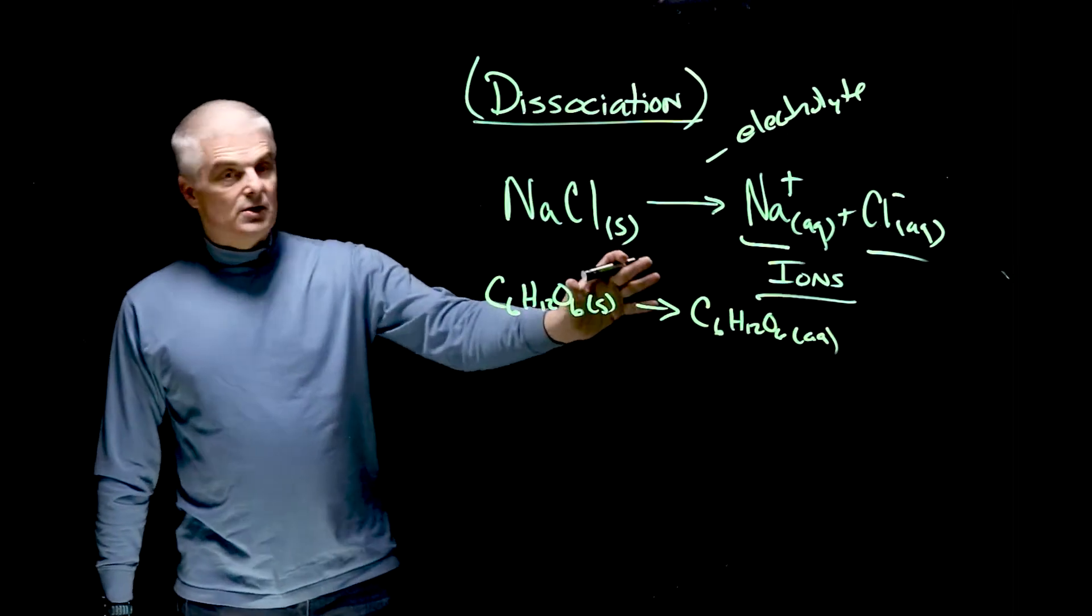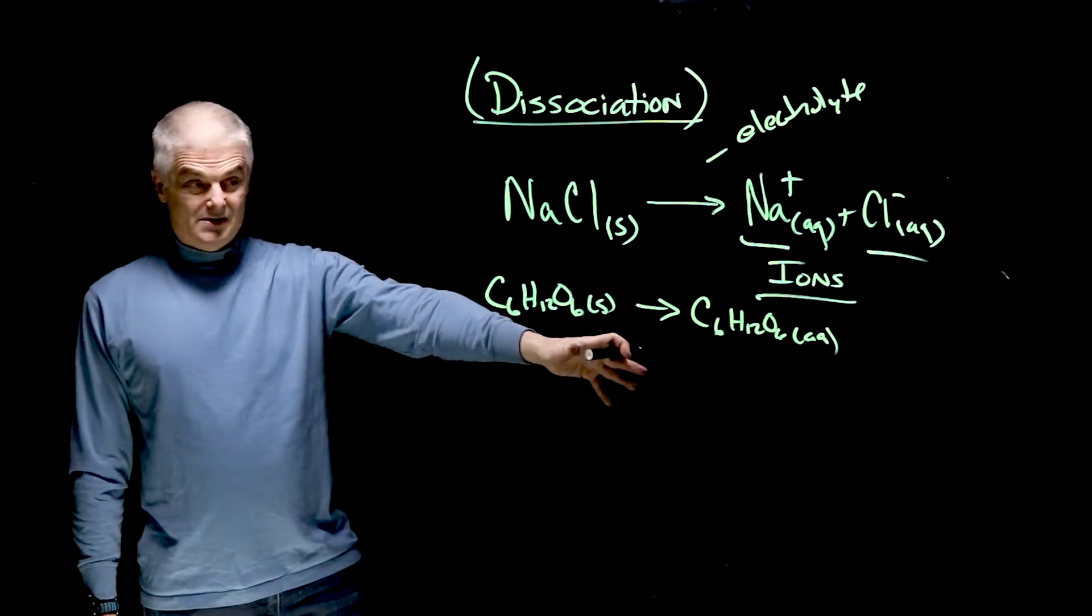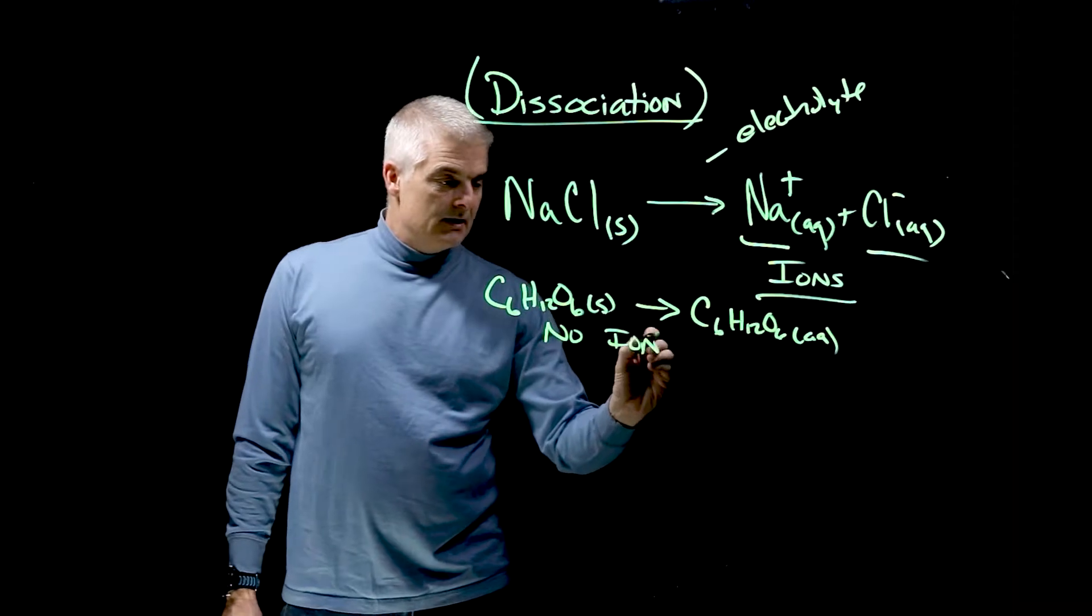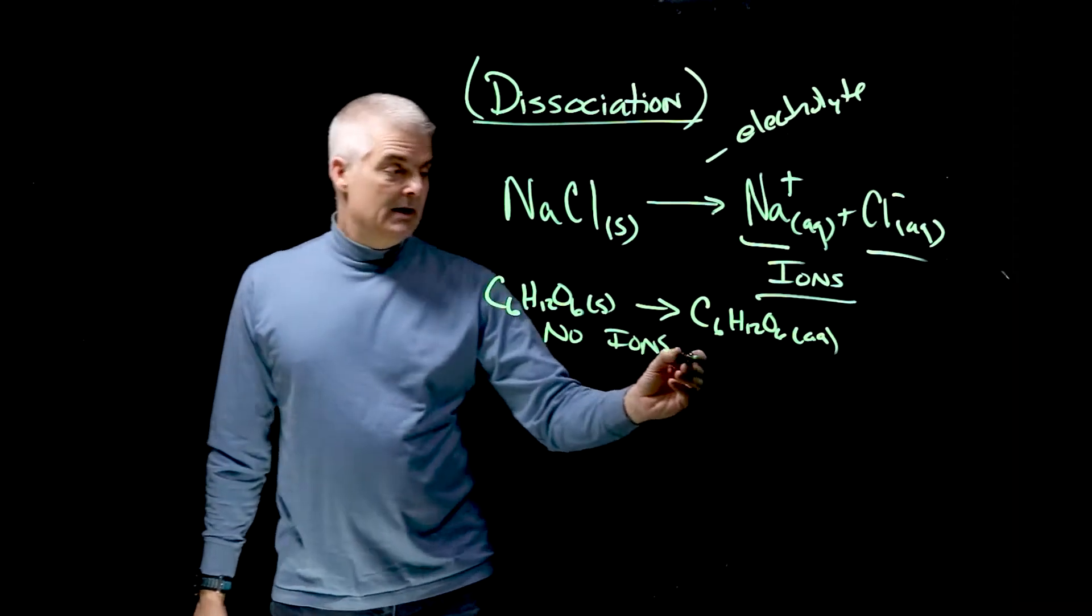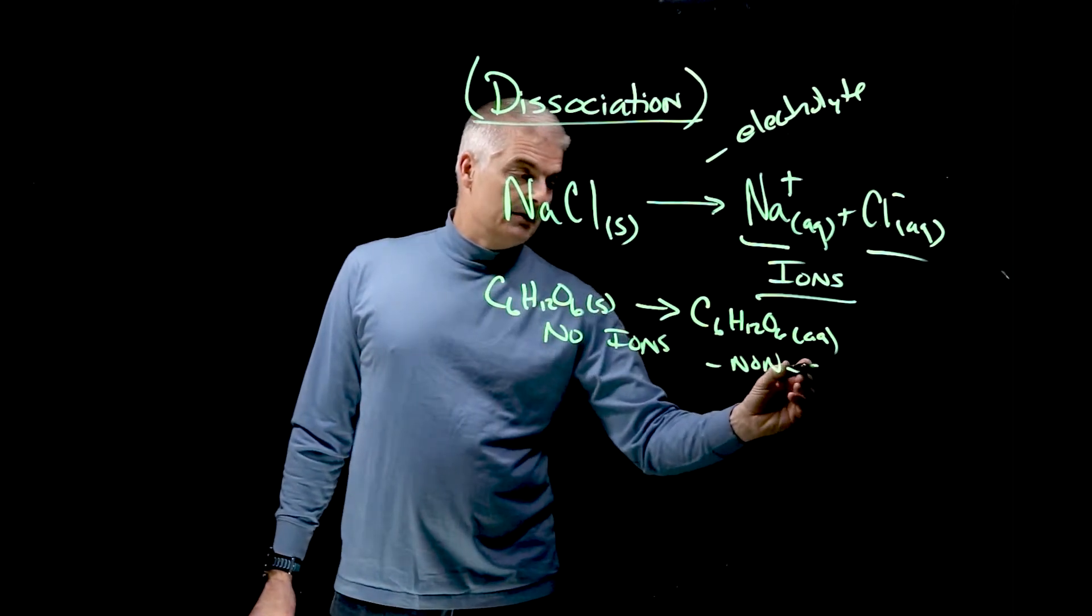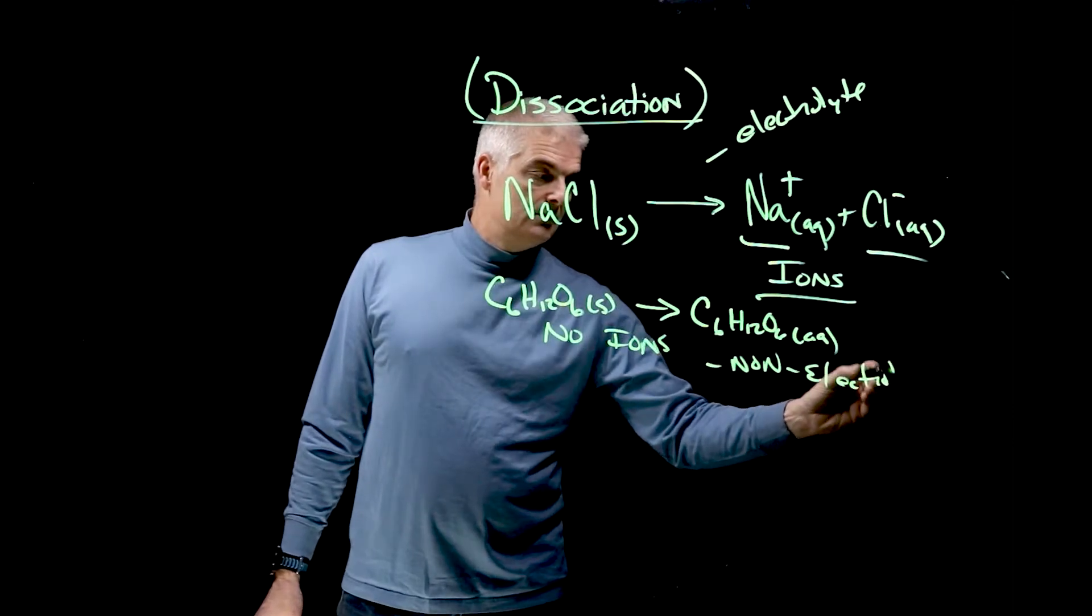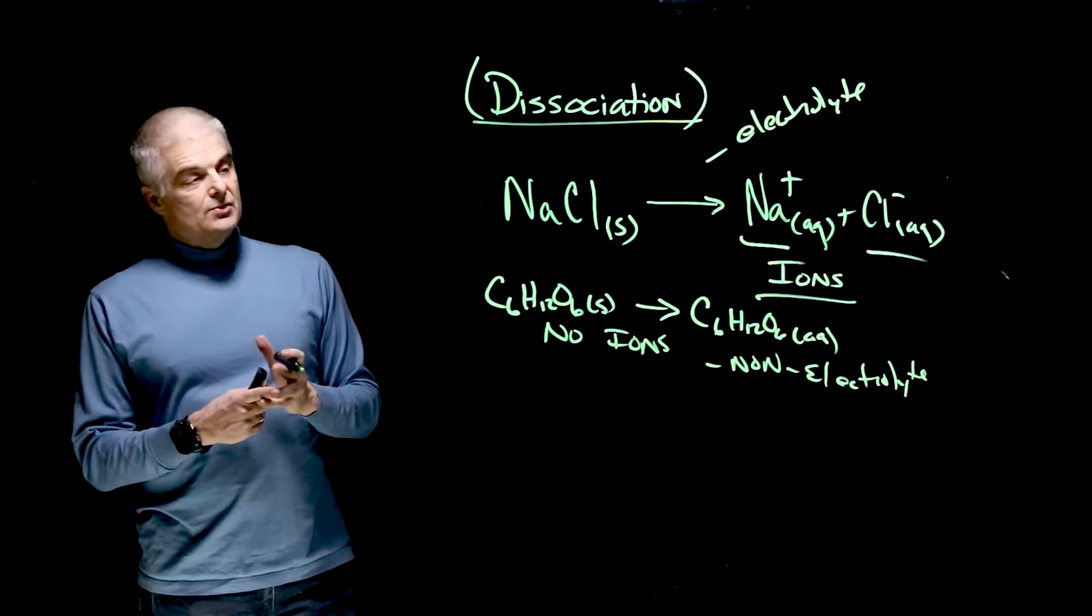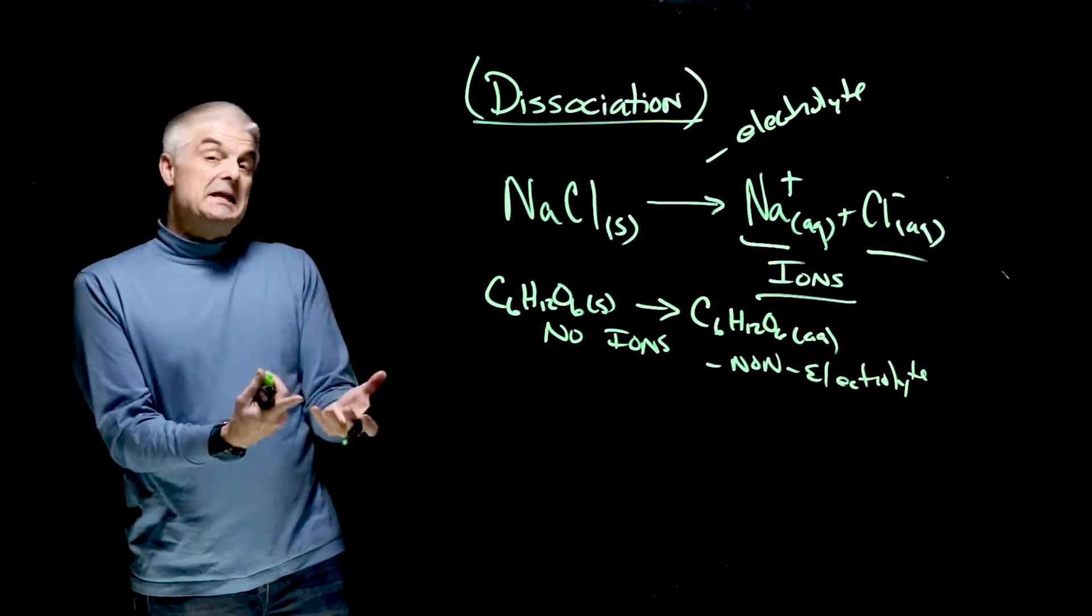Notice there's no charged particles or species, so there are no ions, so we call this a non-electrolyte. So non-electrolytes, because they don't dissociate, do not light the light bulb up.